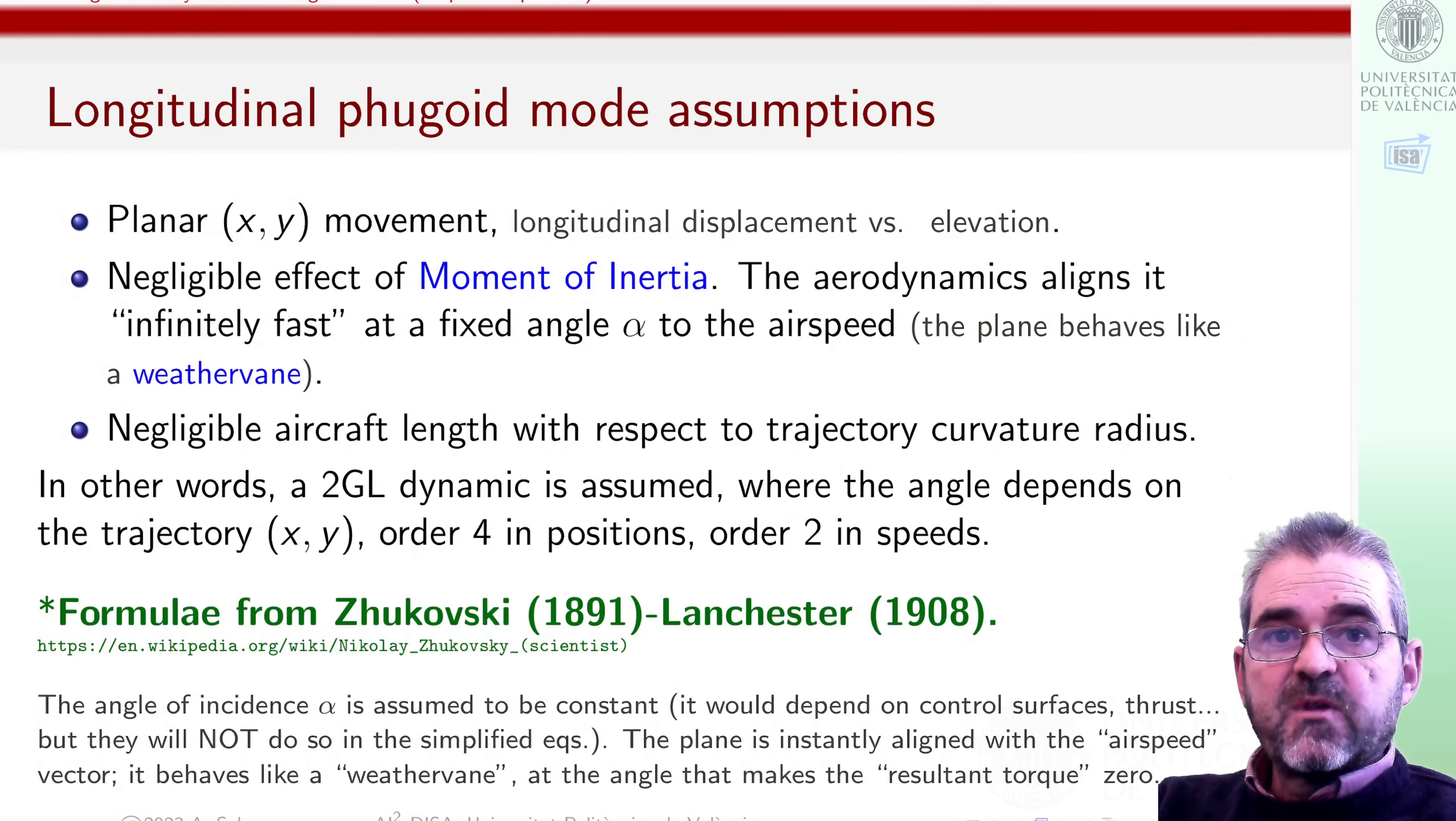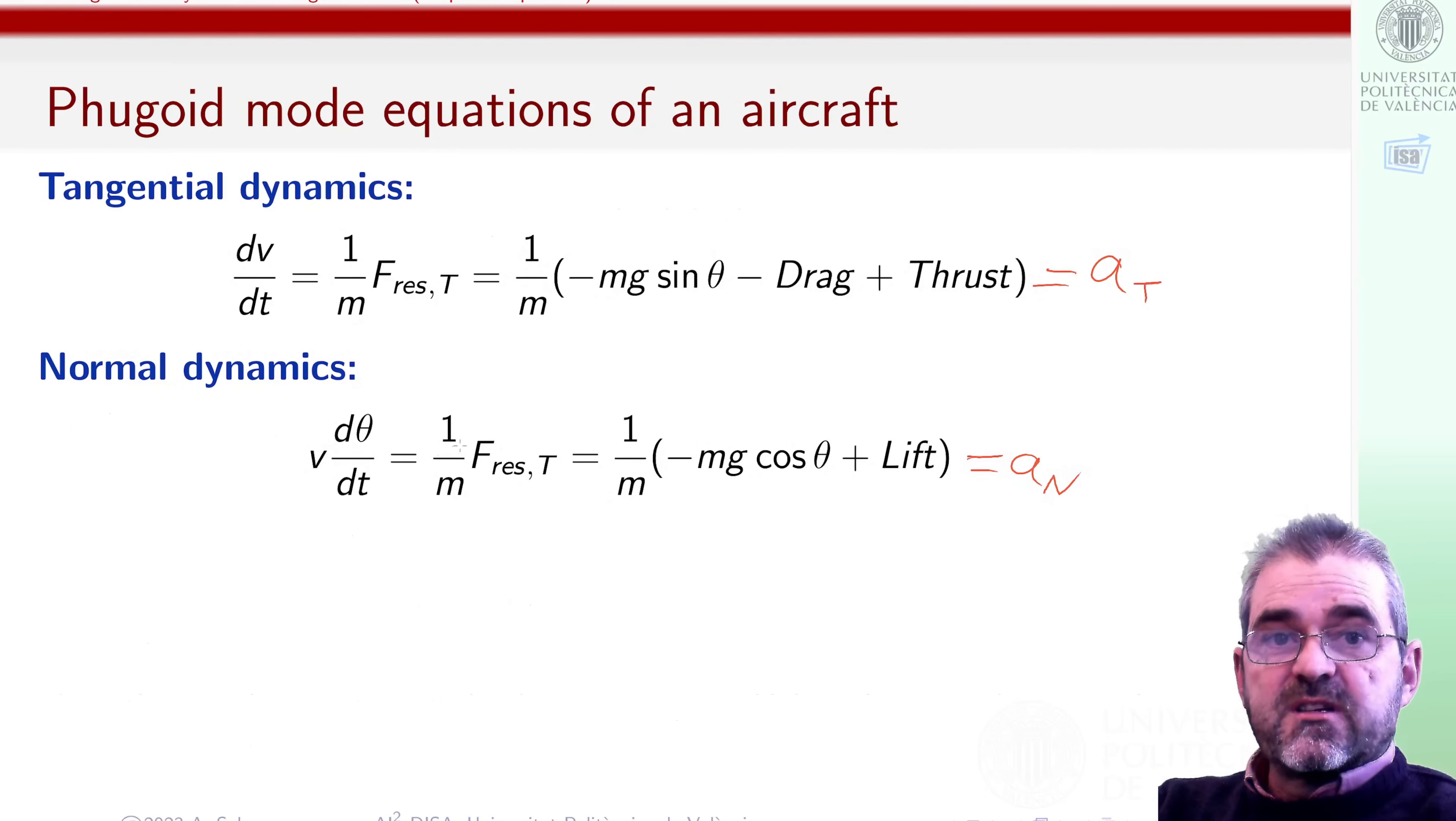In a previous video, we saw that under some assumptions, the most important of which was negligible rotational inertia, so the plane behaved like a weather vane, instantly aligning with the wind velocity vector, with the airspeed vector. With that assumption and some extra stuff, we could consider the simplified dynamics of the airplane as the dynamics of a point mass, and we derived that